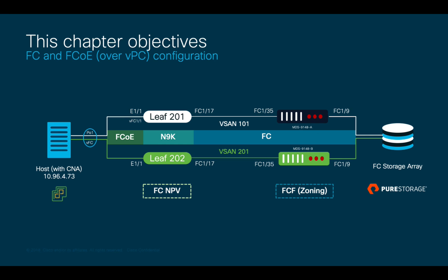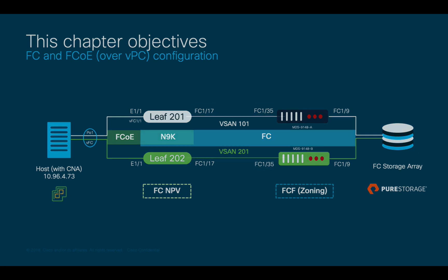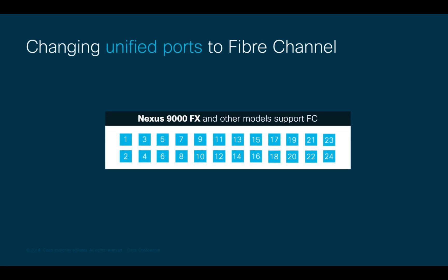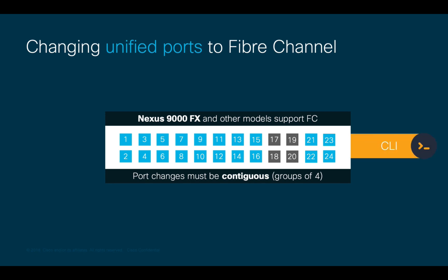Since we will need Fiber Channel uplinks to connect from our ACI leaf nodes on port 1/17 to the MDS switches on port 1/35, we must make sure that we have a switch model that supports unified ports, such as Nexus 9000 FX switches. Another important consideration is that when we perform port conversions from Ethernet to Fiber Channel, we have to do it in contiguous groups of 4 — for example, 1-4, 5-8, and so on. In our case, we need port 1/17, so I'll have to convert ports 17-20 to Fiber Channel. You can do such tasks either through the CLI or the GUI, and after you do it, you will need to reload the switches.